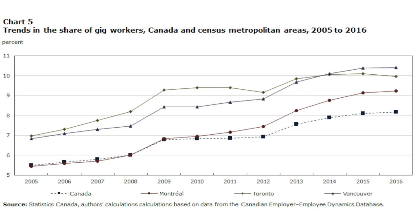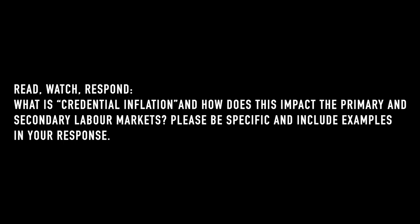With the rise of functional specificity and micro-credentials, more and more folks are suffering from increased precarity and freelancing in their day-to-day work, providing much less security than the primary labour market. In your read, watch, and respond, please answer the following question: What is credential inflation, and how does this impact the primary and secondary labour markets? Please be specific and include examples in your response.